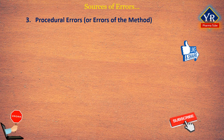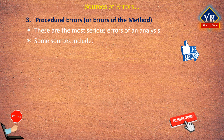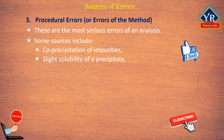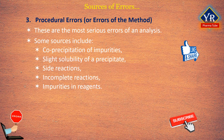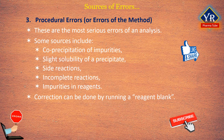Procedural errors, or errors of the method, are the most serious errors of an analysis. Most errors can be minimized or corrected for, but errors inherent in the method cannot be changed unless the conditions of the determination are altered. Sources of methodological errors include co-precipitation of impurities, slight solubility of a precipitate, side reactions, incomplete reactions, and impurities in reagents. Sometimes correction can be relatively simple, for example by running a reagent blank. A blank determination is an analysis on the added reagents only; it is standard practice to run such blanks and subtract the results from those of the sample. However, a good blank analysis alone cannot guarantee correct measurements.